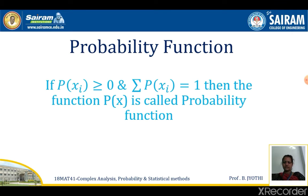Probability function: if p(xi) is greater than or equal to 0 and the summation of p(xi) is 1, then the function is called a probability function. That is, for various values of x, p(xi) should be greater than or equal to 0 for any value of x, and together the sum of all probabilities should equal 1, not more than that.